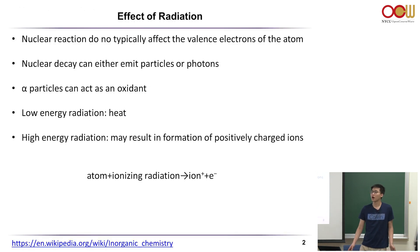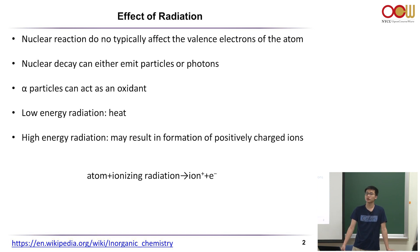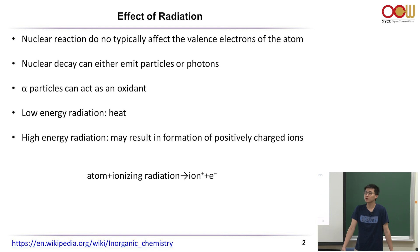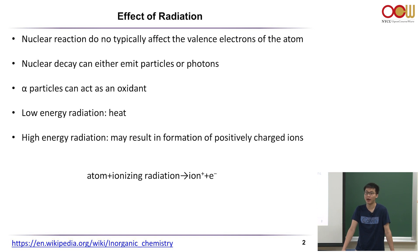Radioactive compounds can undergo decay reactions and generate radiation. Generally, nuclear reaction or nuclear decay deals with the change in the nuclei instead of valence electrons. Nuclear decay usually involves the creation of a new element. It can emit particles such as alpha particles and beta particles, as well as various types of photons such as gamma rays.